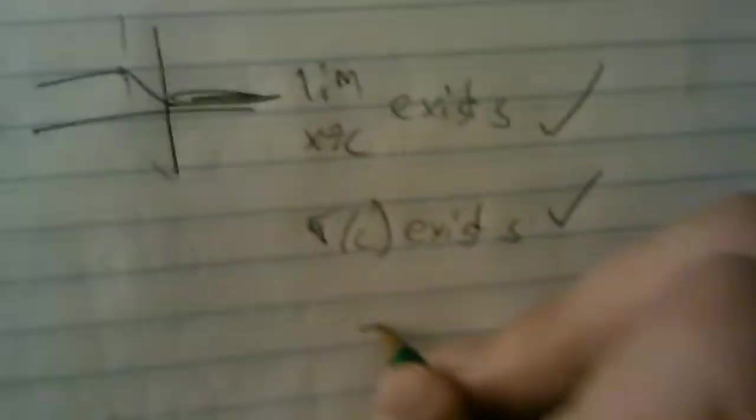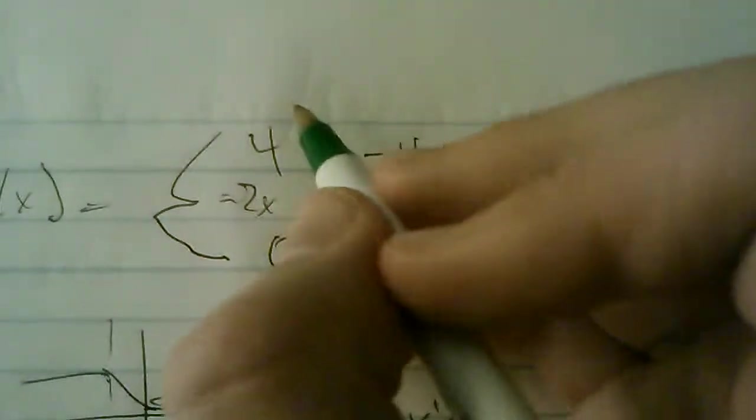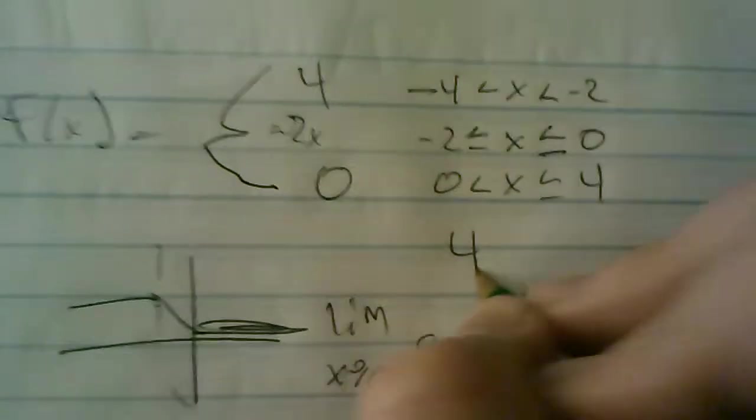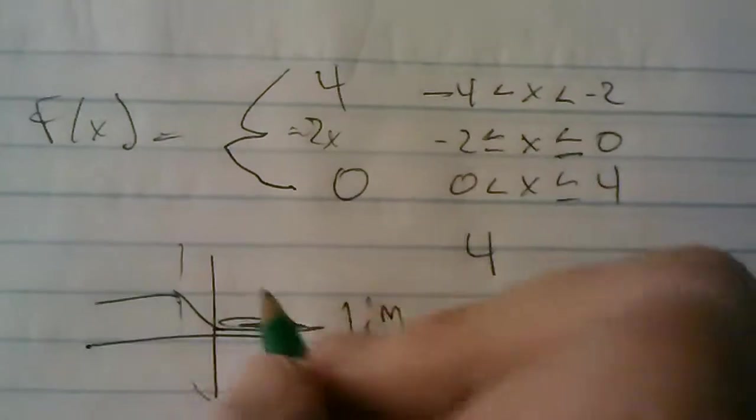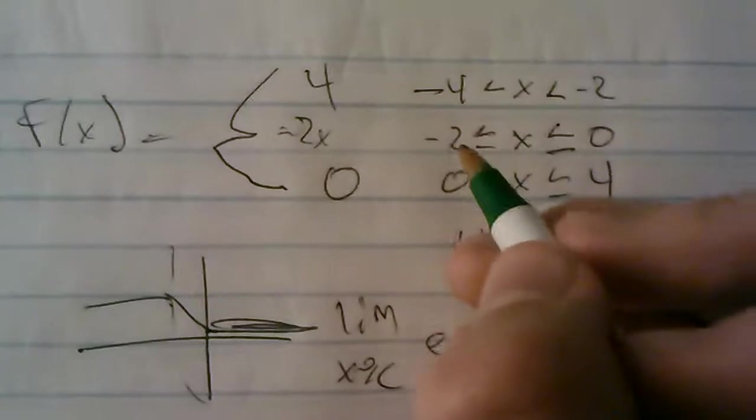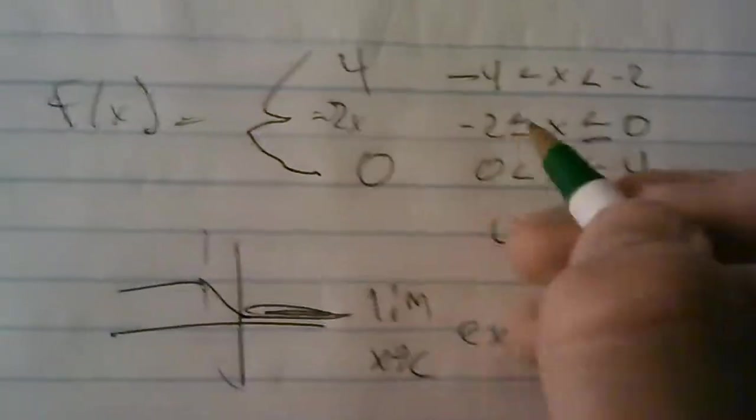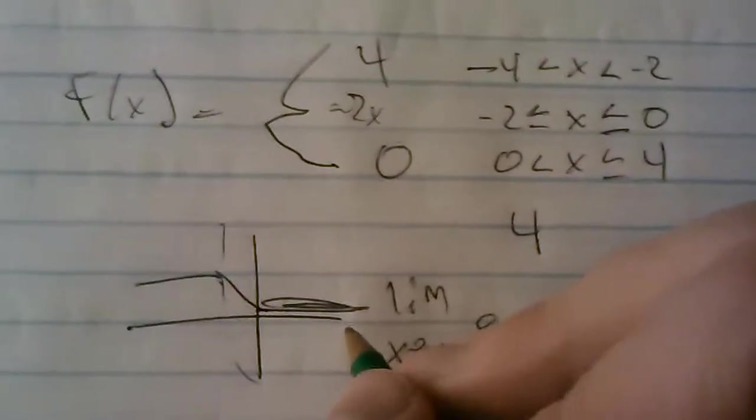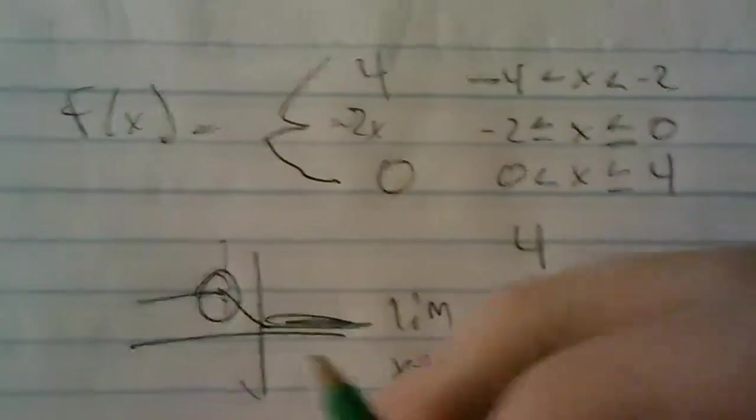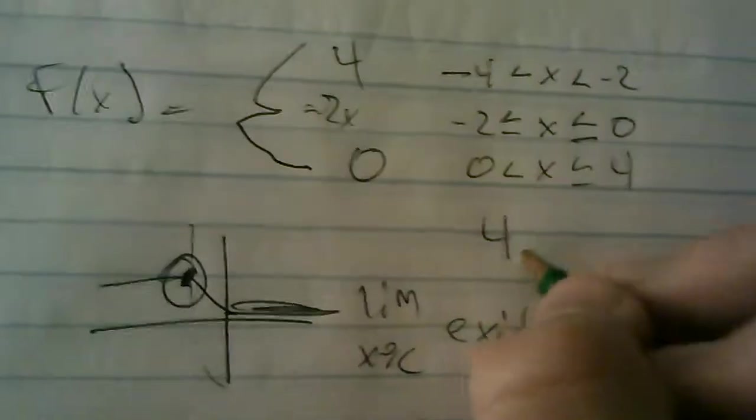Now the only question, are they equal? Well, the limit as x approaches negative two, well from the left side, that's going to be four. Because it's less than, so that's going to be from the left side here. And from the right side, that's going to be negative two times negative two, which is also four. So that's that point right here, and that exists.